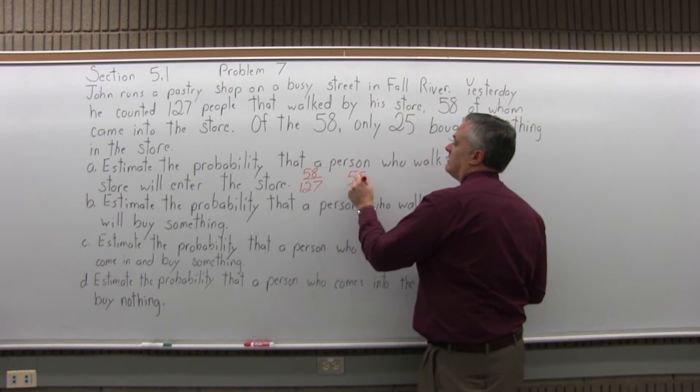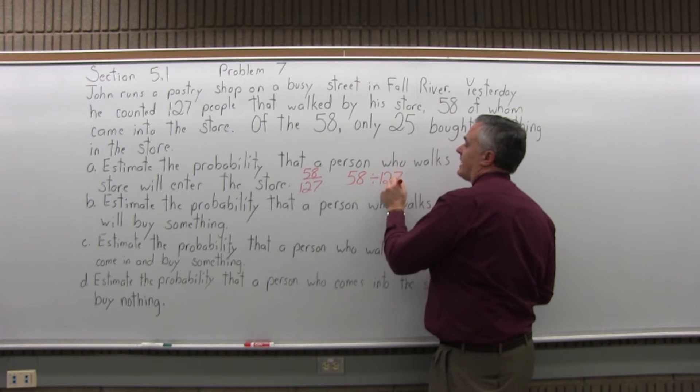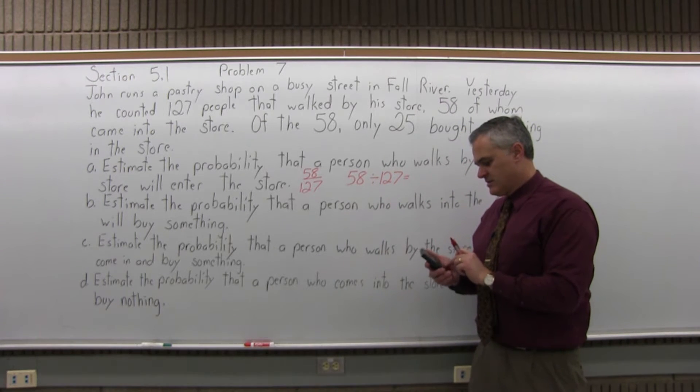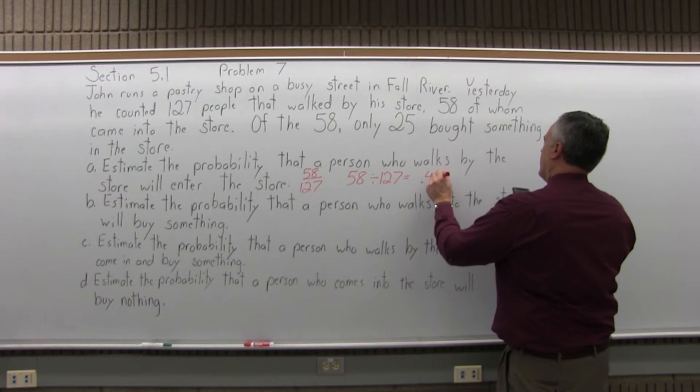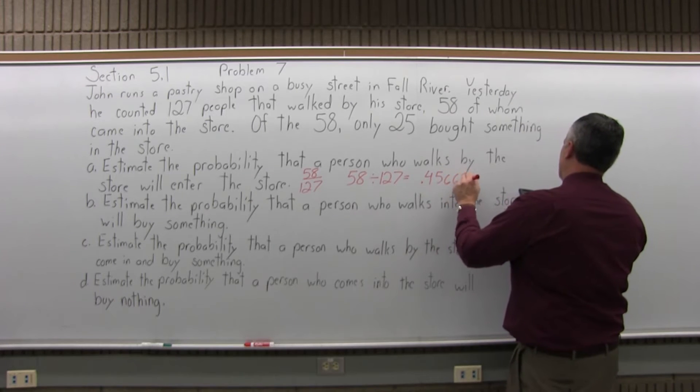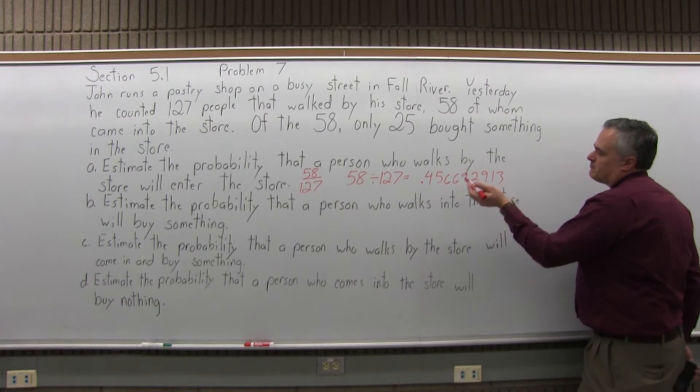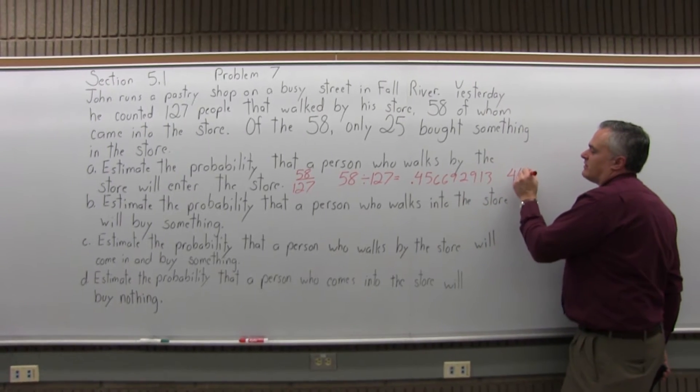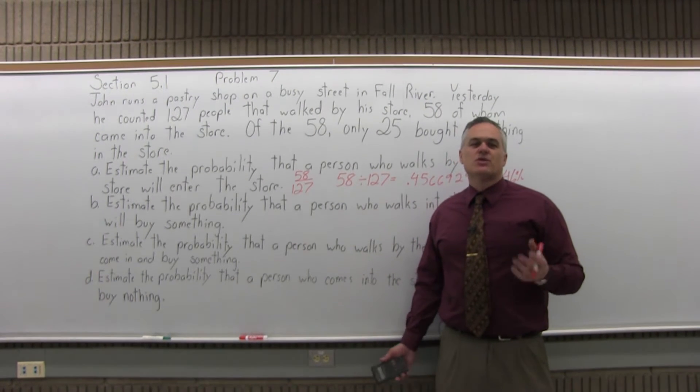The calculator says 0.456692913, which is between 45 and 46 percent. There's about a 46% probability that someone walking by the store will come in.